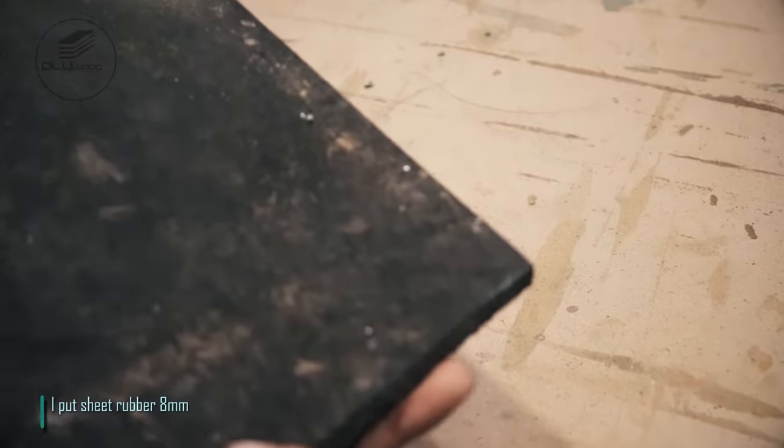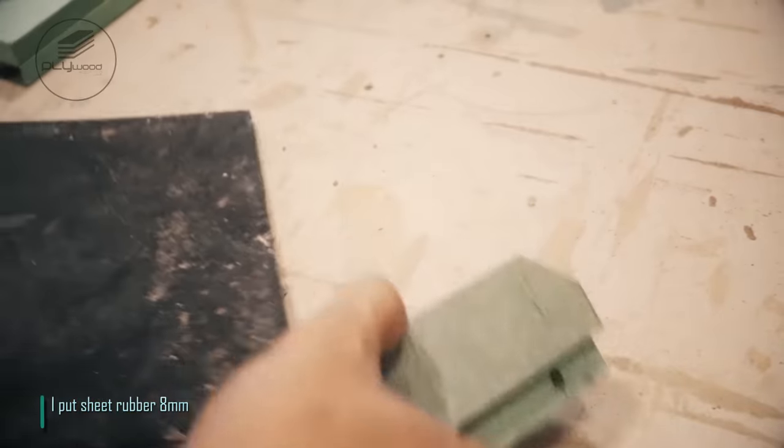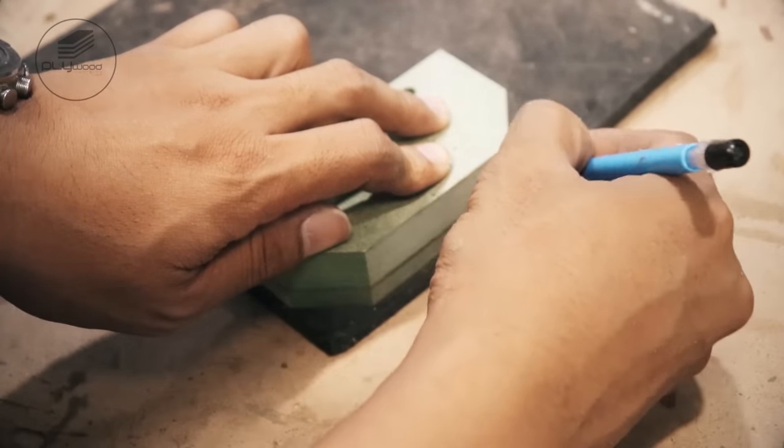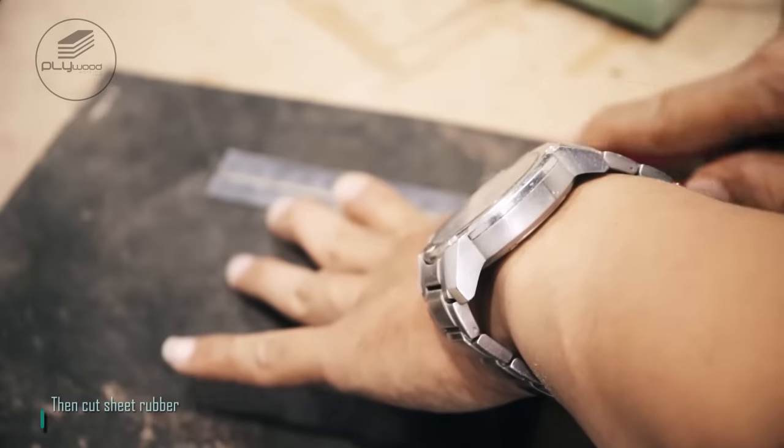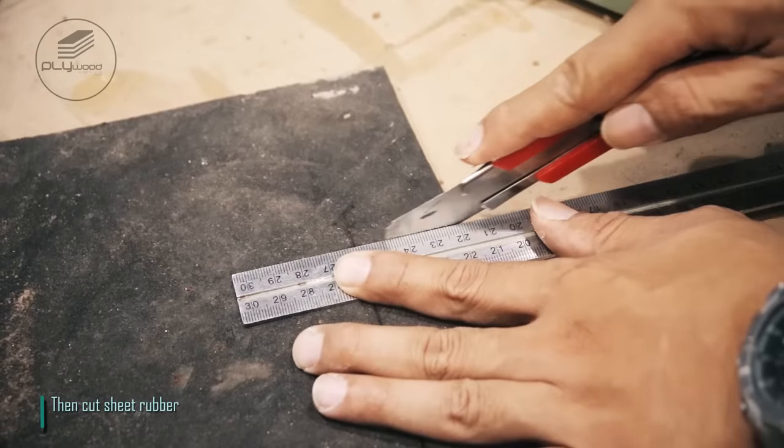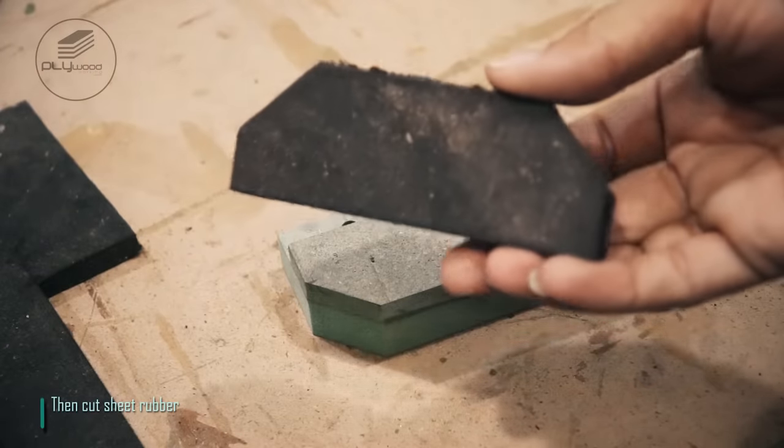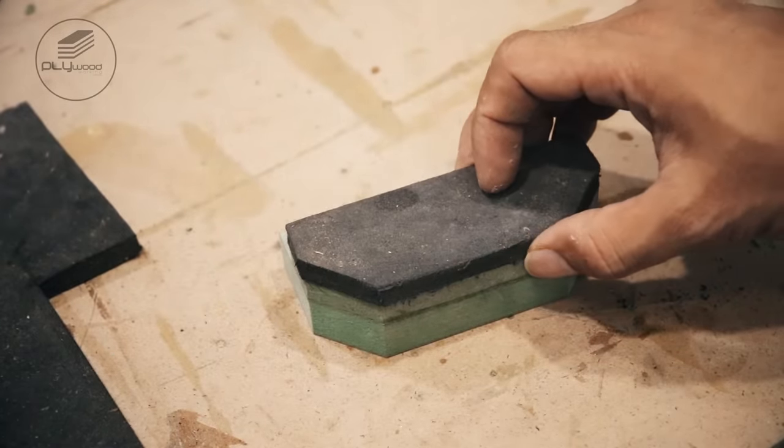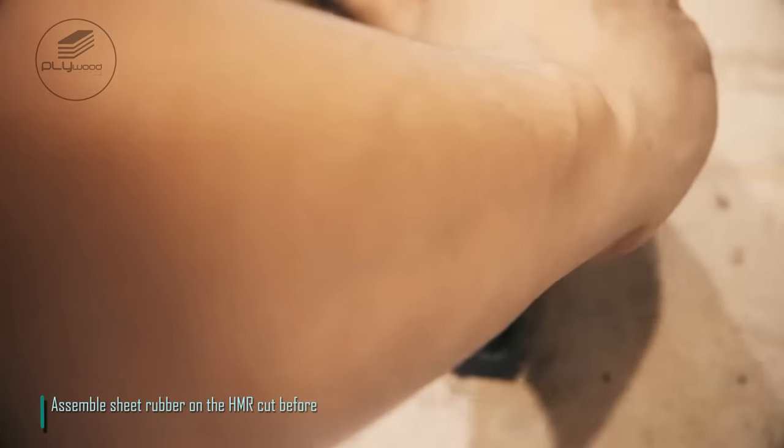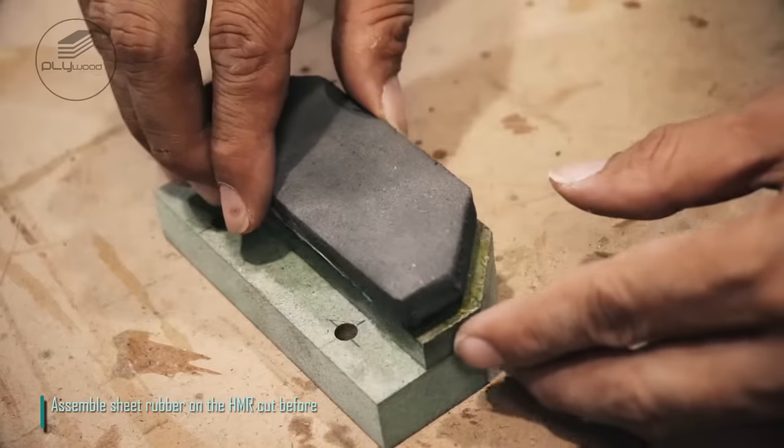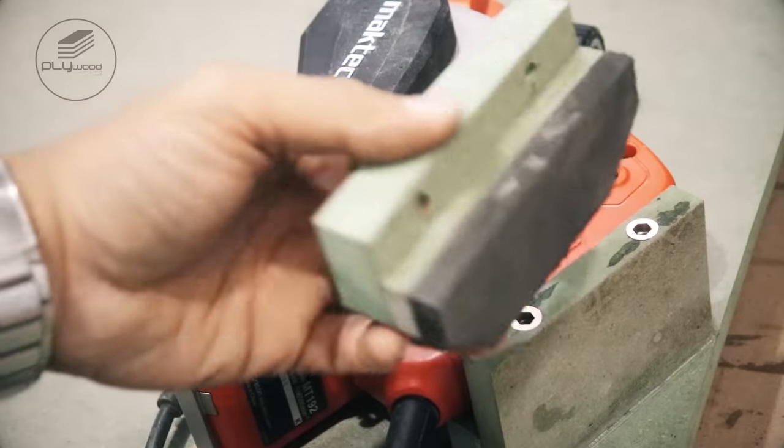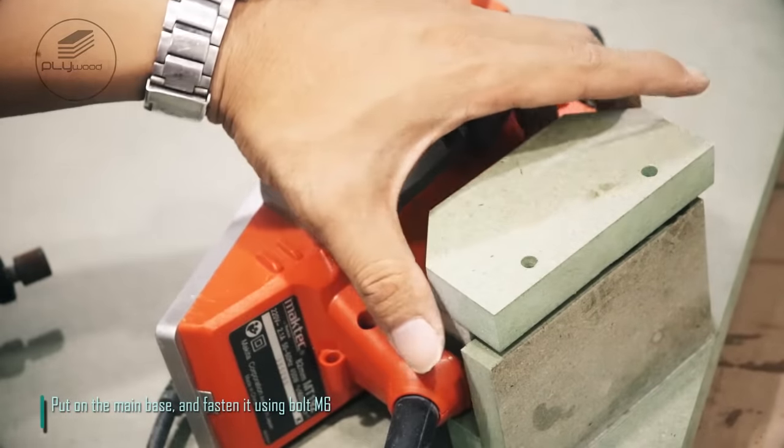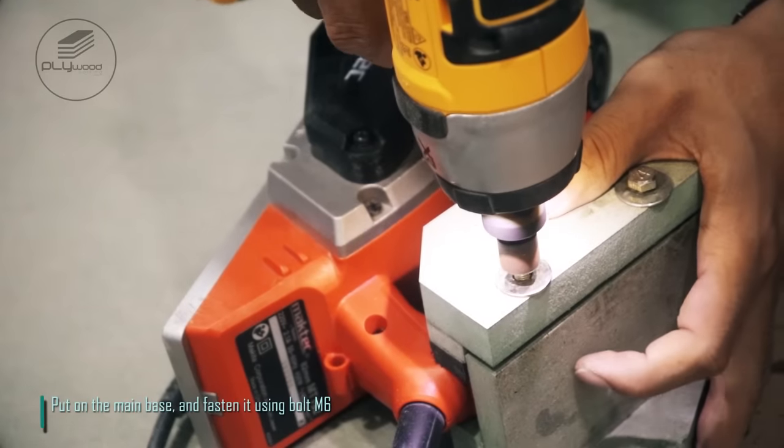I put sheet rubber 8mm. Then cut sheet rubber. Assemble sheet rubber on the HMR cut before. Put on the main base, and fasten it using bolt M6.